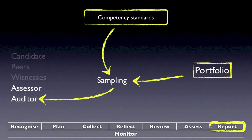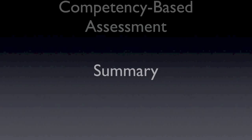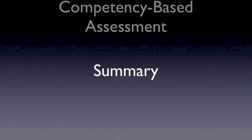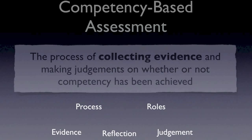At the end, the report goes to an internal or external auditor. This involves sampling the portfolio and looking at whether it matches against the standards. So, in competency-based assessment, we have seen the process of collecting evidence and making judgments on whether or not competency has been achieved — the different processes, roles, the place of evidence, reflection, and how judgment should be made primarily on the evidence of performance rather than knowledge.